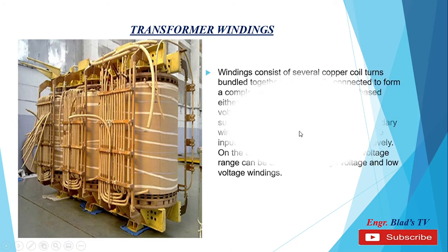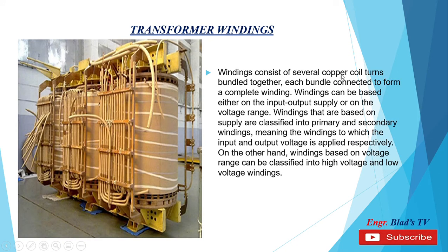Transformer windings. Windings consist of several copper coil turns bundled together, with each bundle connected to form a complete winding. Windings can be based either on the input-output supply or on the voltage range. Windings based on supply are classified into primary and secondary windings, meaning the windings to which the input and output voltage is supplied respectively. On the other hand, windings based on voltage range can be classified into high voltage and low voltage windings.